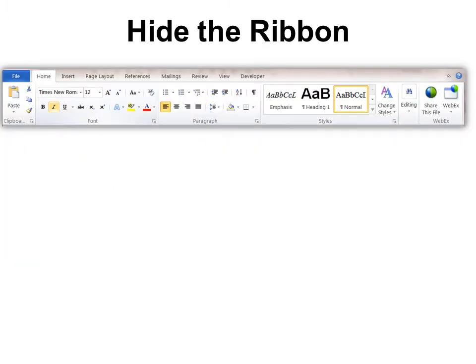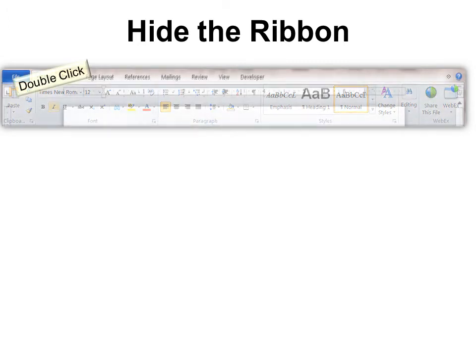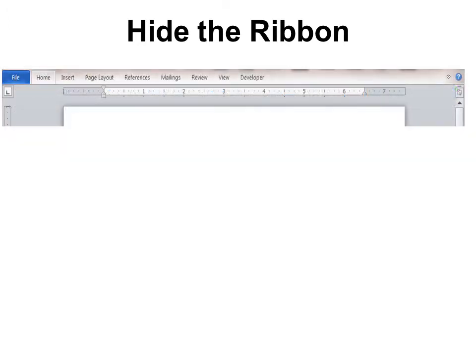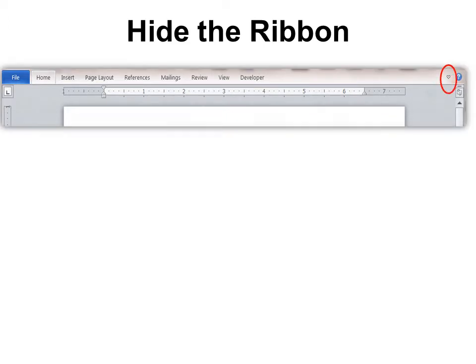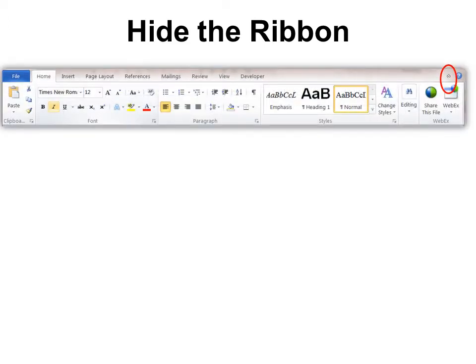Same with the ribbon. Sometimes you want the ribbon out of the way so that you have more room for your document. You simply double-click on the tab and it will hide the ribbon. Also, if you look all the way over to the right, you'll see a caret — sometimes pointing down, sometimes pointing up — and if you click that, it will automatically hide or show the ribbon.